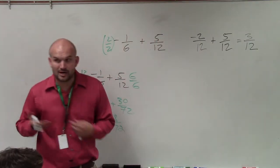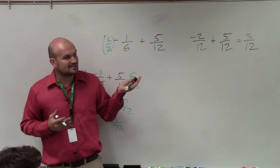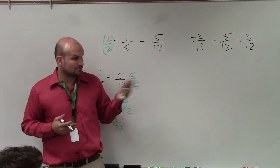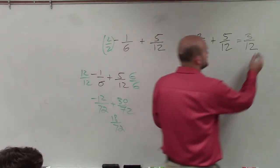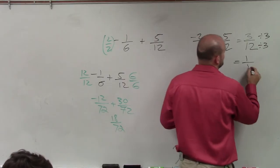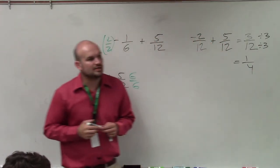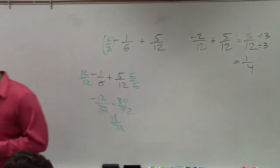And now remember, I want to make sure I always put this in simplest form. So can you divide the same number in the top and the bottom, or the numerator and denominator? And yes, you can divide out a 3 in both of those. So when I divide the top and the bottom by the same number, I can reduce this down to 1/4, which will be your final answer. Make sense? OK.